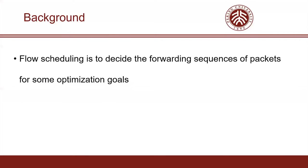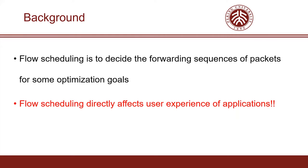Flow scheduling is to decide the forwarding sequences of packets for some optimization goals. If the switch decides to always forward the packets of a flow to the queue with the lowest priority, the flow may starve to death when congestion occurs — all packets of this flow could be buffered in the queue. Therefore, flow scheduling directly affects user experience of applications.